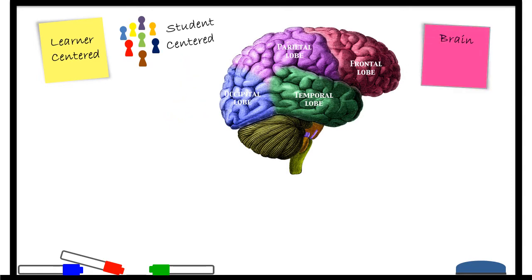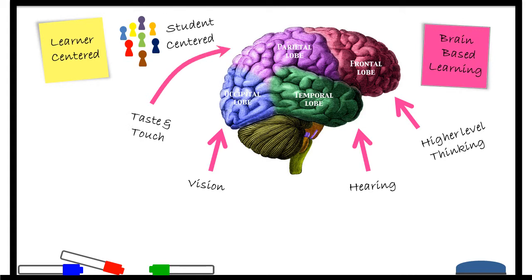Dr. Patricia Wolfe describes how the brain is wired for engagement. The brain is made up of four lobes: one for vision, one for hearing, one for higher level thinking, and one for touch and taste.